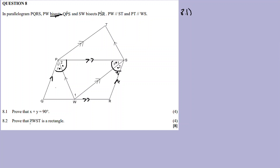8.1: Prove that 2x plus y is equal to 90 degrees. Alright, now x is on this angle and y is on this angle. The question is: prove that 2x plus y is equal to 90 degrees. So we need to find an equation that combines the x angle with the y angle, such that we get 2x plus y equal to 90 degrees.